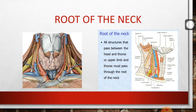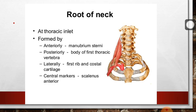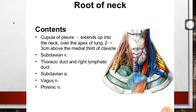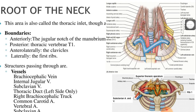Now, the root of the neck. All structures that pass between the head and the thorax, or the upper limb and the thorax, must pass through the root of the neck. The root of the neck is at the thoracic inlet. The boundaries are: anteriorly by the manubrium sterni, posteriorly by the body of the first thoracic vertebra, laterally by the first rib and costal cartilage, and the central marker is scalenus anterior.